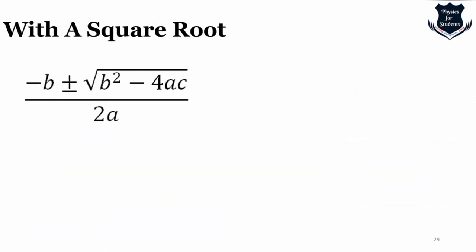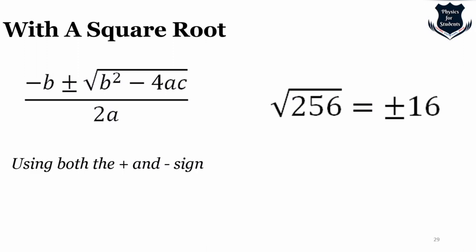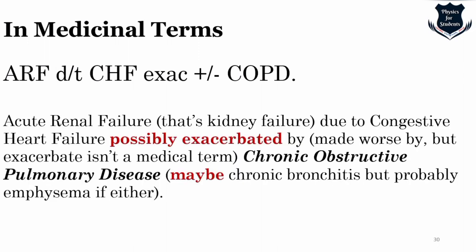In quadratic equations, square root of 256 yields both +16 and −16, showing the usage of ± in algebra. In medicinal terms, doctors use ± to indicate that a diagnosis is approximate — for example: acute renal failure due to congestive heart failure, possibly complicated by chronic obstructive pulmonary disease, may be chronic bronchitis but probably emphysema. The ± sign in medical notation means 'more or less' or 'coming close to.'